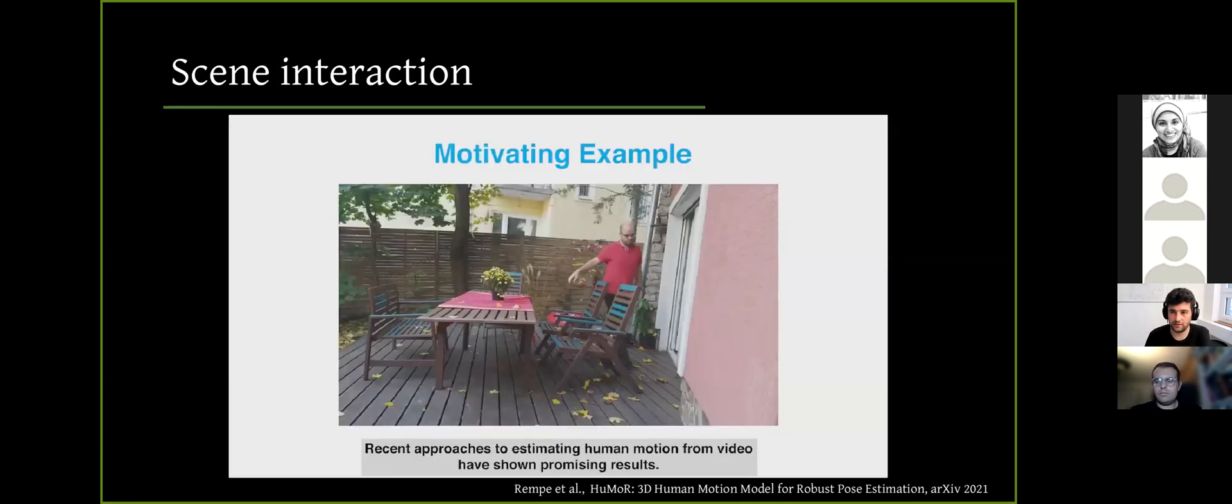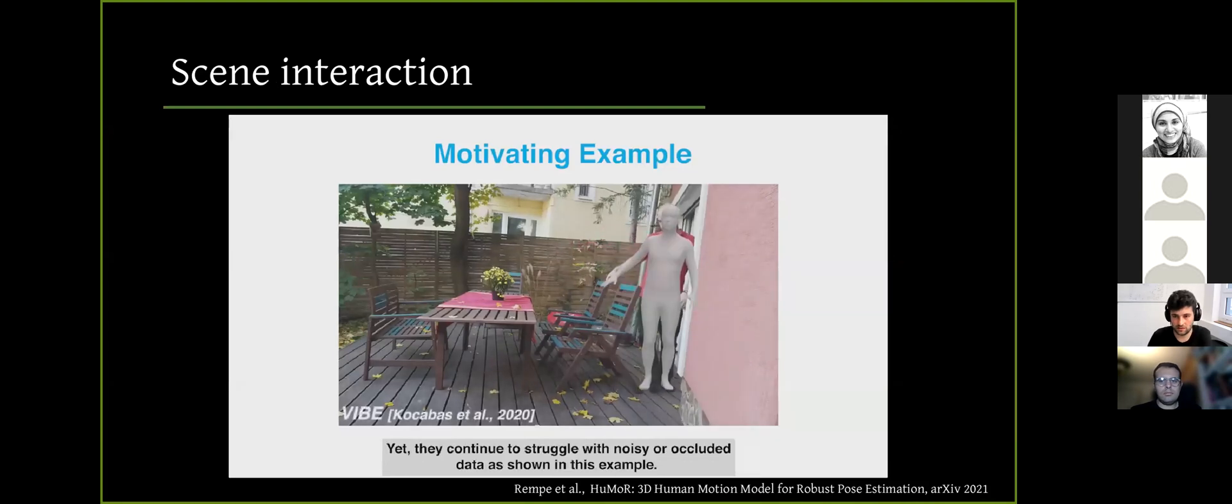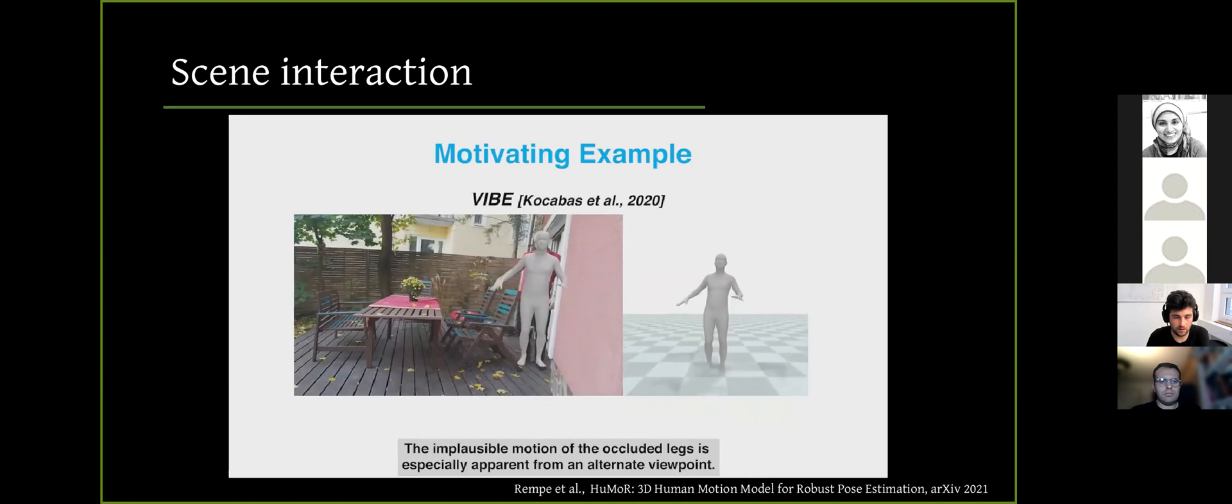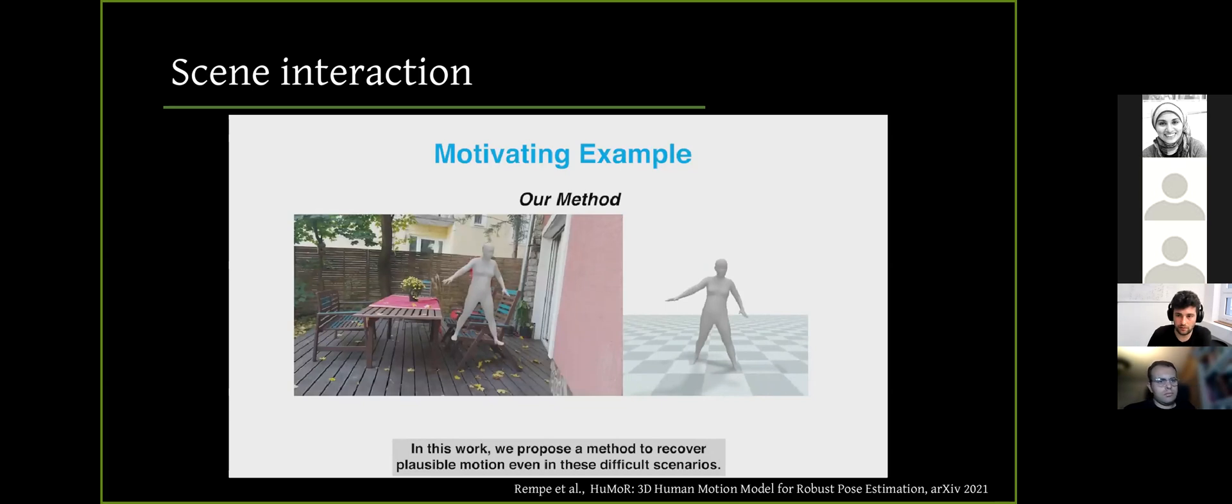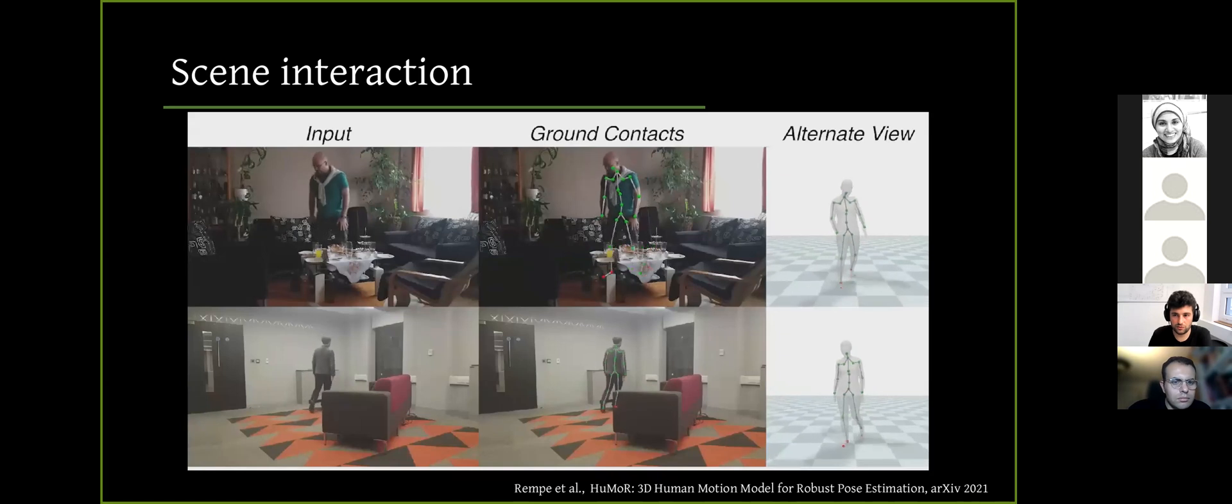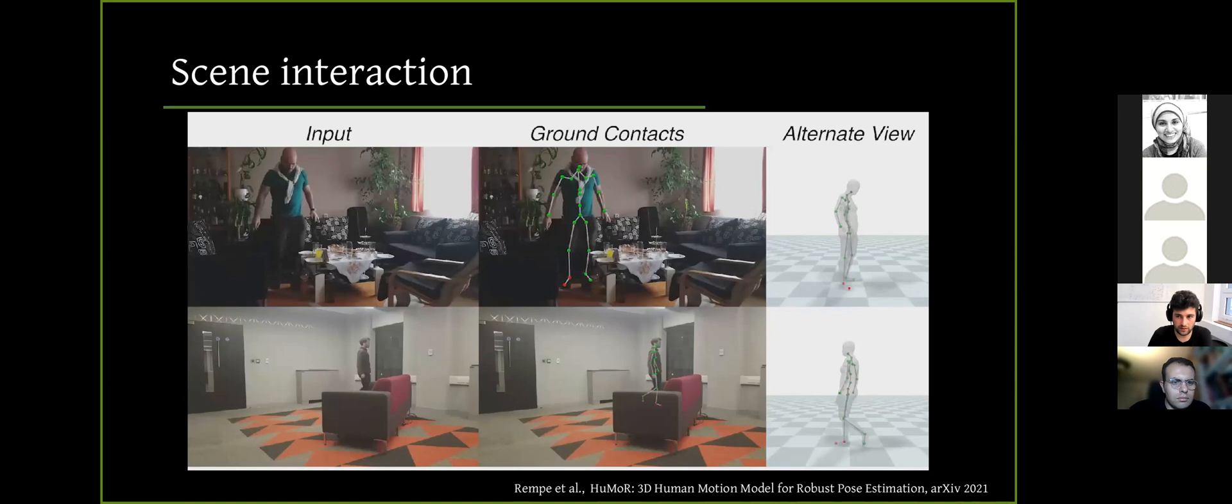So another problem that we face with VIBE, VIBE does not take scene constraints into account. Hence, it struggles with scene occlusion, inconsistent body translation, and ground penetration. And in a very recent work named HUMOR, the authors tackle this problem by training a motion prior again, which can model the contact between the ground plane and the human body. And this motion prior is used during test time optimization to estimate 3D motion along with ground contact from 2D key point observations. And later, these ground contact labels are used as an additional term in the optimization to enforce plausible scene grounding.